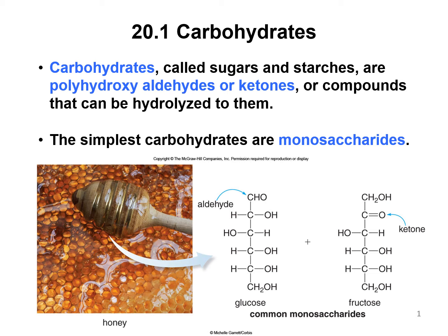The simplest carbohydrates are called monosaccharides, two of which are depicted here: glucose, which you should become familiar with its structure, as well as fructose. Notice that glucose is an aldehyde and fructose is a ketone. Both are six-carbon sugars.